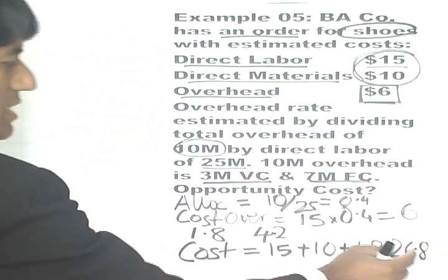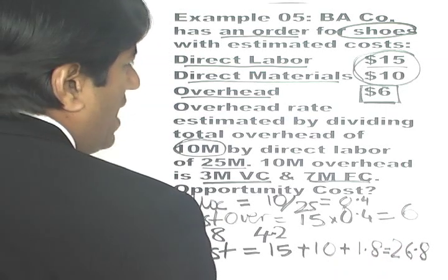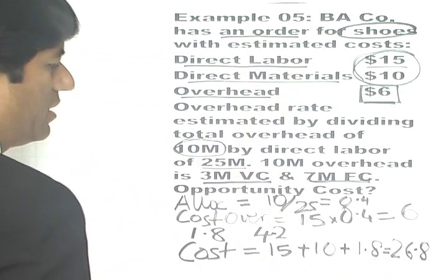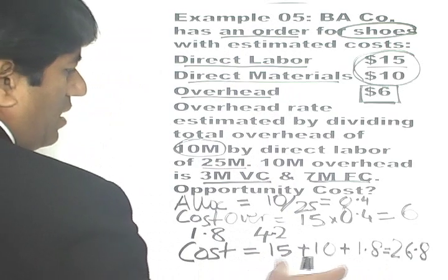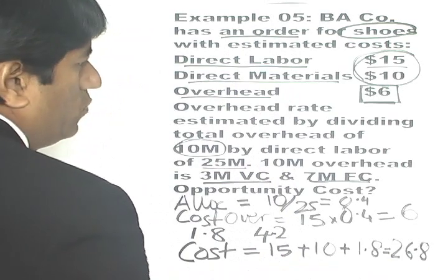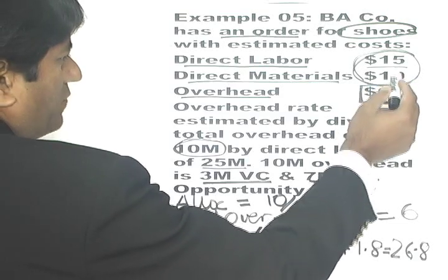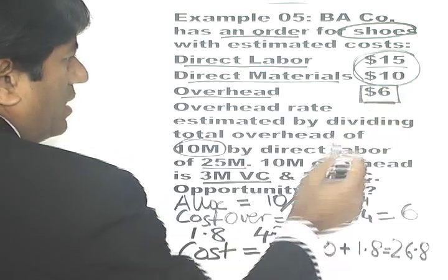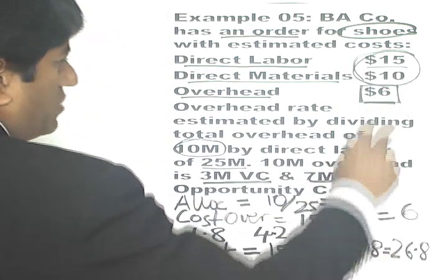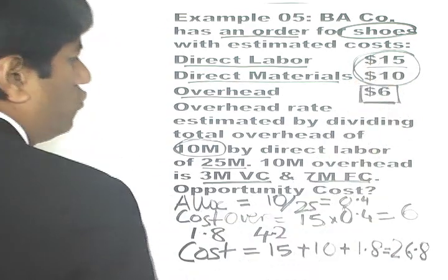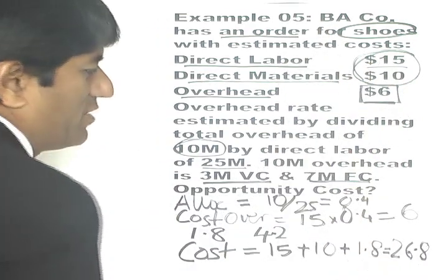This $26.8 is the number you should compare with the revenues this activity will produce to decide whether to proceed, rather than comparing using the full cost of $15 + $10 + $6 = $31. So $31 is not the true cost of this activity — it's rather $26.8.